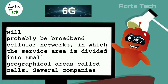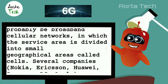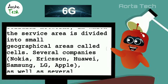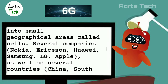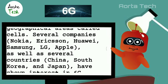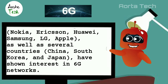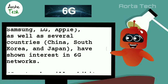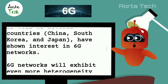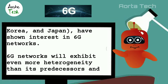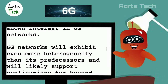Several companies — Nokia, Ericsson, Huawei, Samsung, LG, and Apple — as well as several countries including China, South Korea, and Japan have shown interest in 6G networks. 6G networks will exhibit even more heterogeneity than their predecessors.